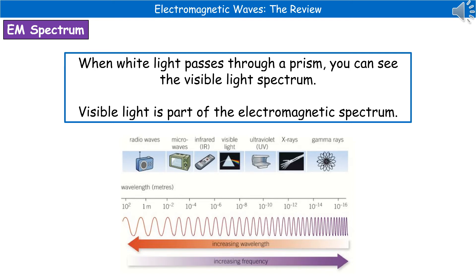Welcome to our review on electromagnetic waves. The first thing we need to know is what the electromagnetic spectrum is. Perhaps the easiest way to start thinking about it is to introduce a wave that we're all familiar with, which is visible light. Our visible light is made up of white light, and when that passes through a prism, you can actually see the spectrum that makes up visible light. Visible light is just one part of our electromagnetic spectrum, and you can see the diagram at the bottom there that shows us everything else.